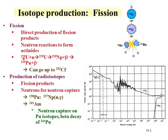Plutonium is formed through neutron capture on uranium-238, forming uranium-239, which beta decays to neptunium-239, then beta decays to plutonium-239. One can continue up the chain via capture on plutonium, all the way up to americium, curium, berkelium, and californium—including isotopes such as californium-252 from this route.